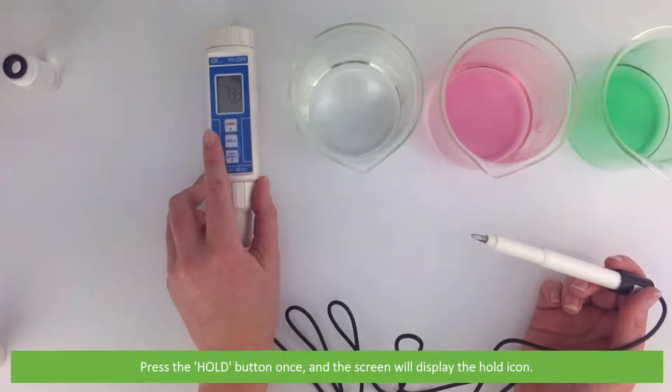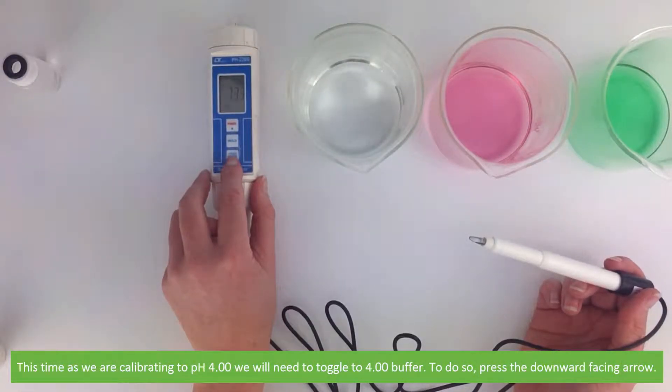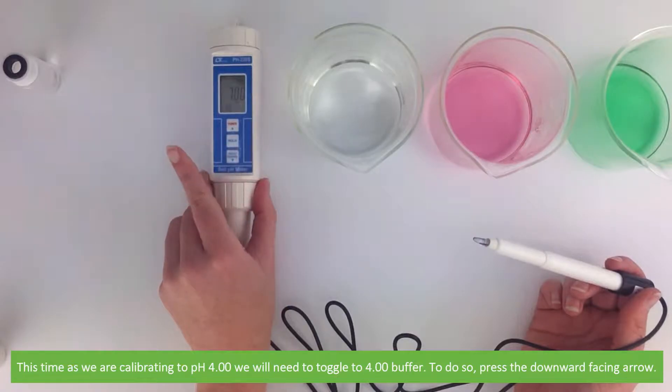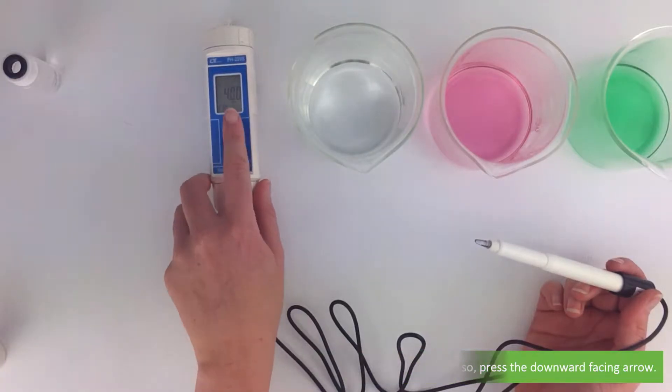This time we are calibrating to pH 4, so we will need to toggle to the 4.00 buffer. To do so, press the downward facing arrow till 4.0 appears on the screen.